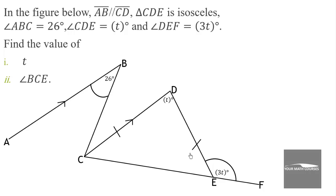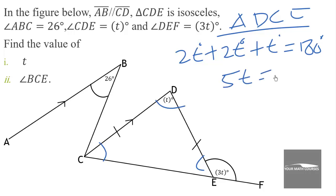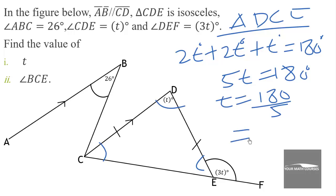Summing all angles in triangle DCE must give 180 degrees. So 2t plus 2t plus t equals 180 degrees, giving us 5t equals 180 degrees. Therefore t equals 180 divided by 5, which is 36 degrees. We found the value of t to be 36 degrees.